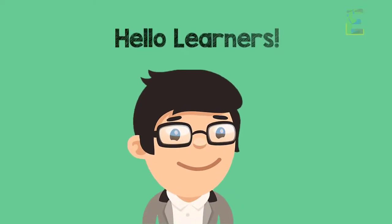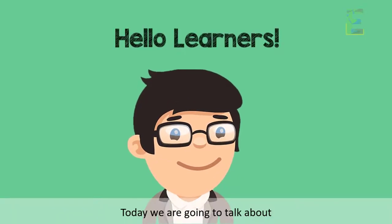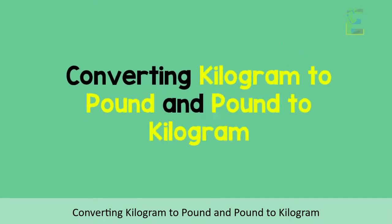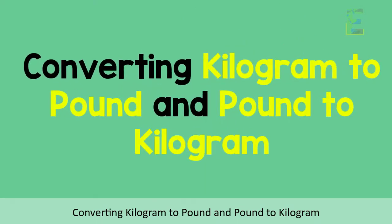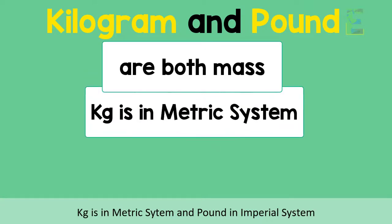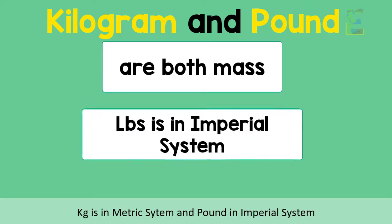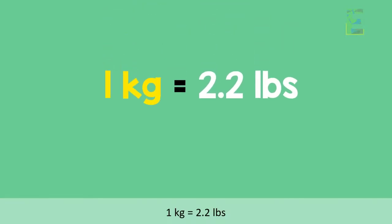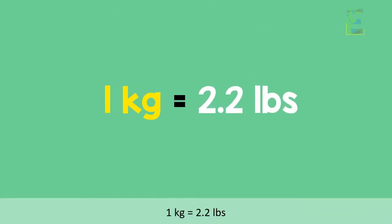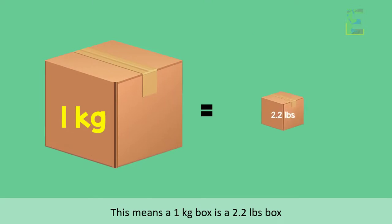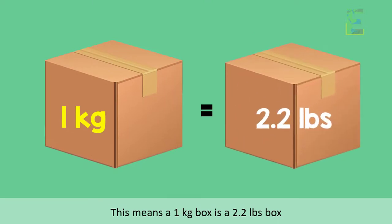Hello, Learners! Today, we are going to talk about converting kilogram to pound or pound to kilogram. Kilogram and pound are both mass. Kilogram is in the metric system and pound in the imperial system. 1 kilogram is equal to 2.2 pounds. This means a 1 kilogram box is a 2.2 pounds box.